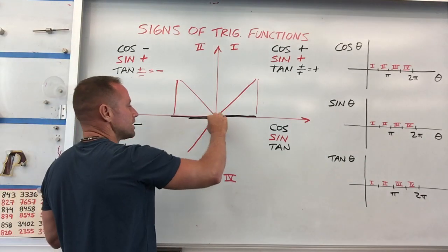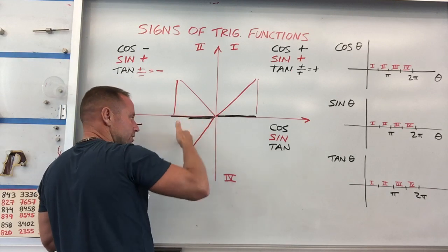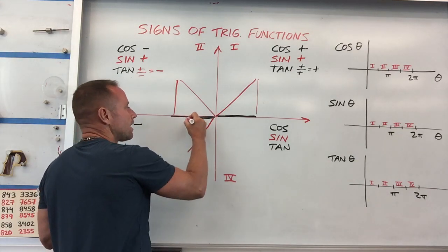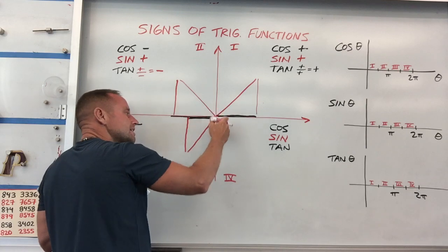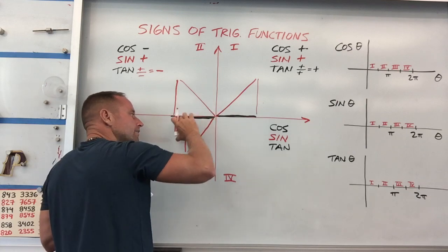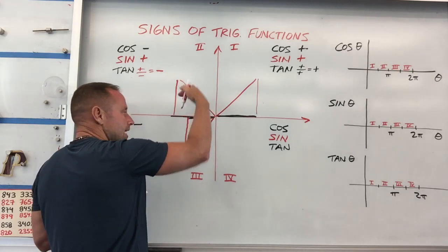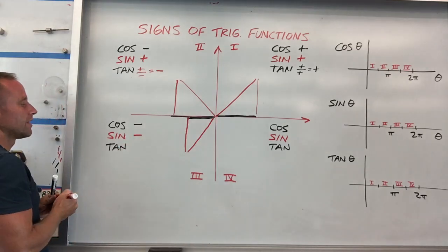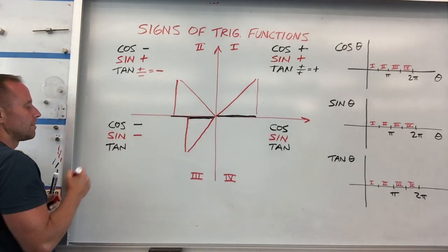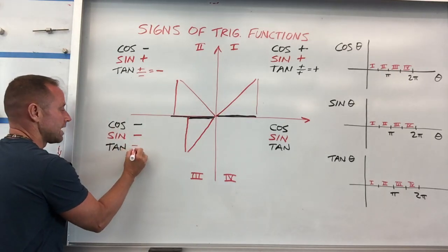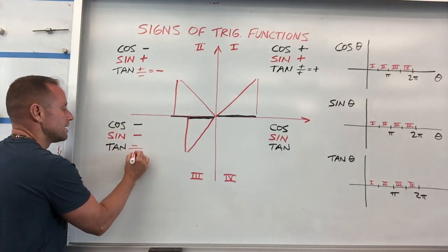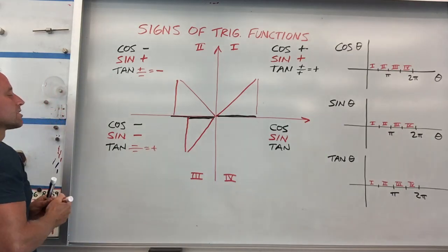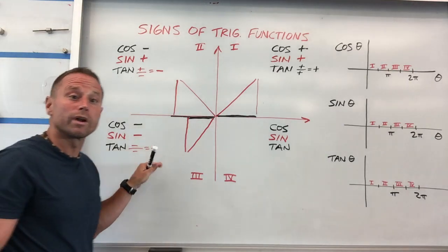Your sine function is going to take the vertical projection of this thing, so that's going to be here. You notice that's now in the negative y direction, so your sine is going to be negative there. And tangent is sine over cosine, so that would be negative over negative — well, that's going to make a positive. So tangent is going to be positive in this quadrant.